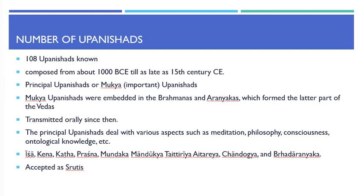The 10 principal Upanishads are Isha, Kena, Katha, Prashna, Mundaka, Mandukya, Taitreya, Aitreya, Chandogya, and Brihadaranyaka. These 10 are accepted as Shrutis by all Hindus, but for the other Upanishads there are disagreements.